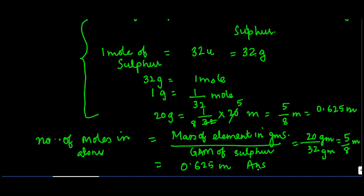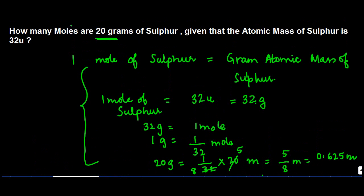And that's your answer. So a simple question, not too difficult to deal with. You can find out the number of moles in a particular quantity of an element if the atomic mass of that element is given. Thank you for being with us today.